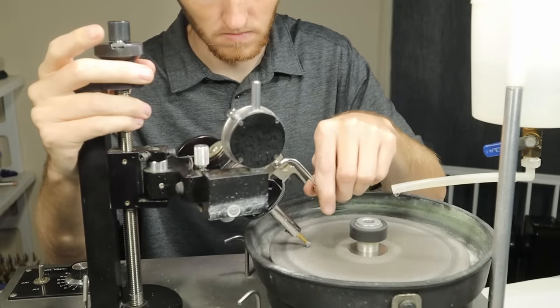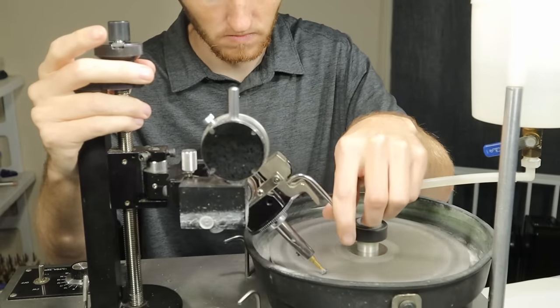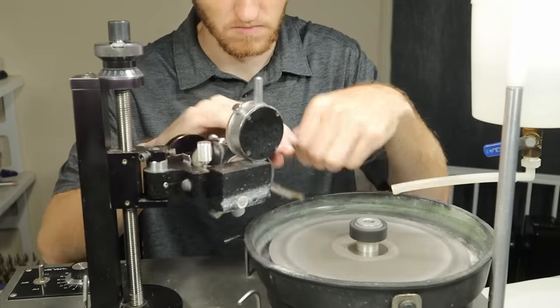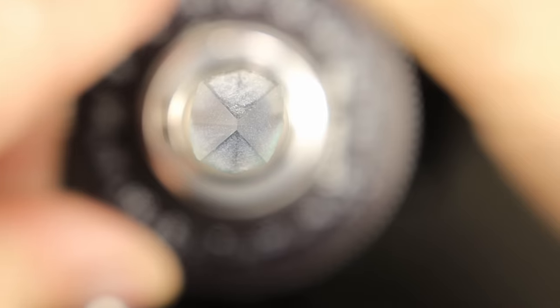The 600 grit lap is my main cutting lap. I start by cutting in four facets to form a center point. A lot of meet point faceting diagrams use the establishment of a center point as a base for cutting in the rest of the facets on the stone.